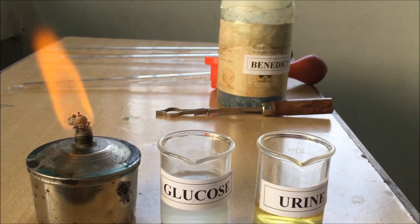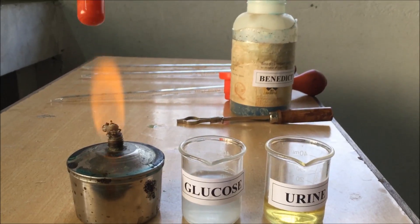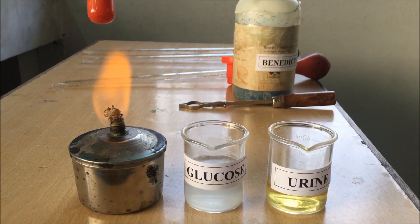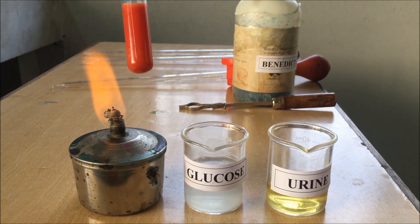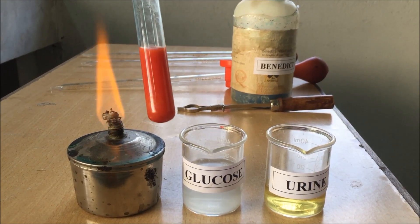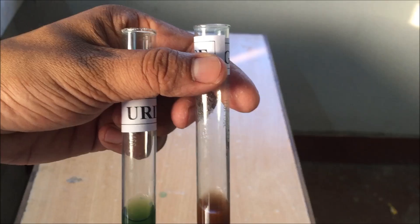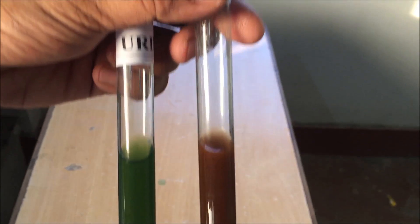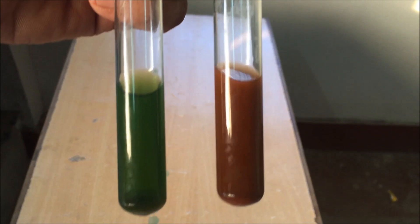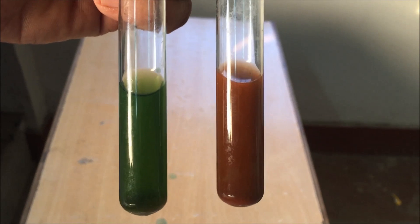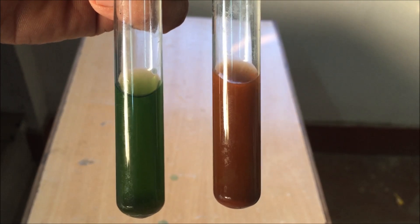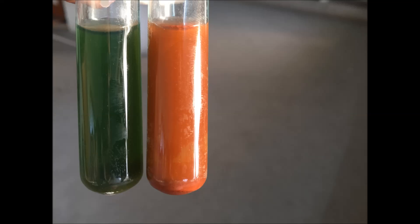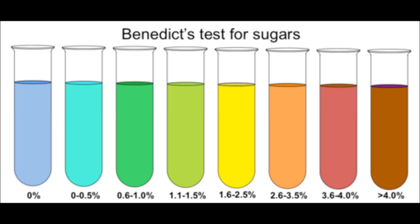If we compare both samples, we can easily observe the differences. The first sample is urine, which shows a green color, and the second sample of pure glucose shows a red color — indicating a significantly higher sugar concentration in the glucose sample compared to the urine sample.